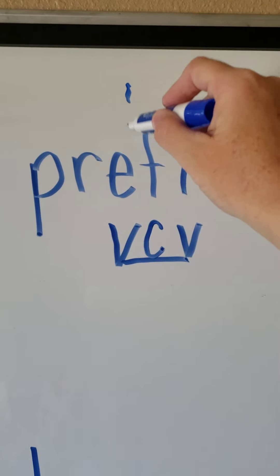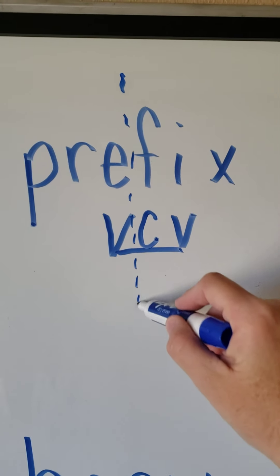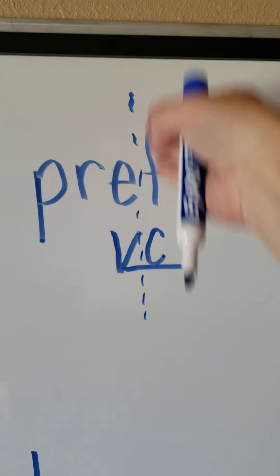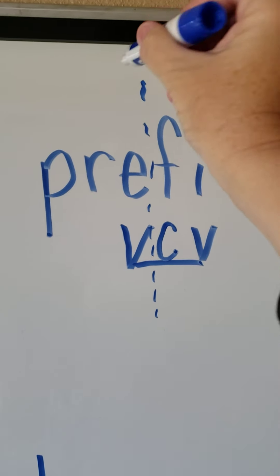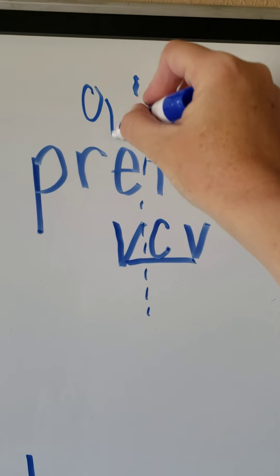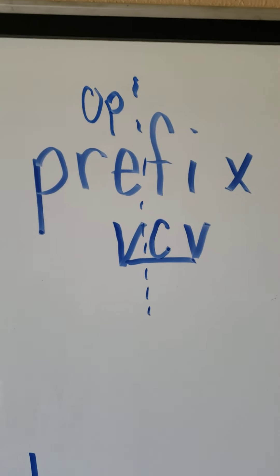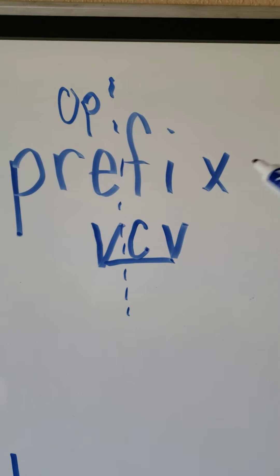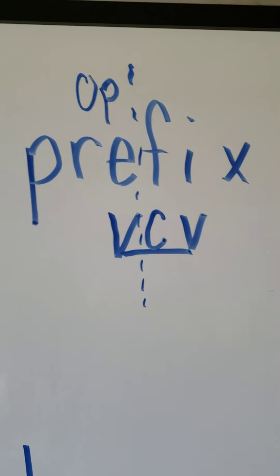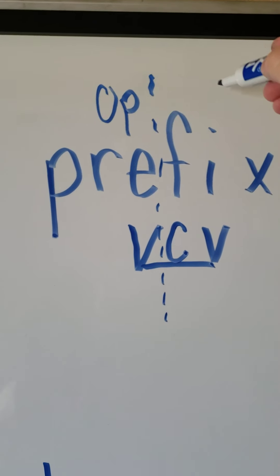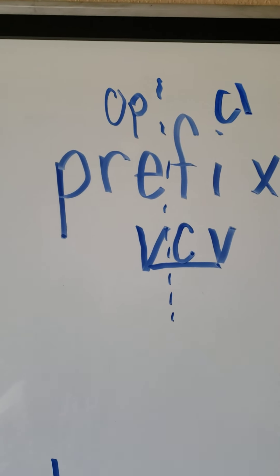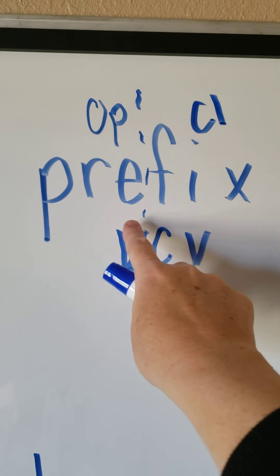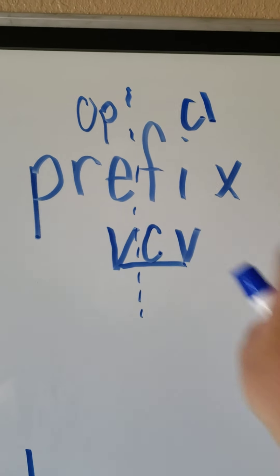First we're going to split before that consonant. Find the vowel, look next door because that's the end of the syllable — it's left open. When we have an open syllable, the E says its name, so it says E. Find the vowel, look next door because there is a consonant after the vowel, then it is closed and the I says I. So let's read our word — prefix.